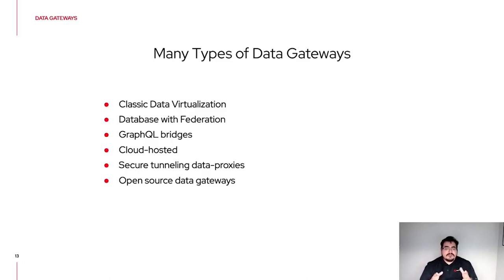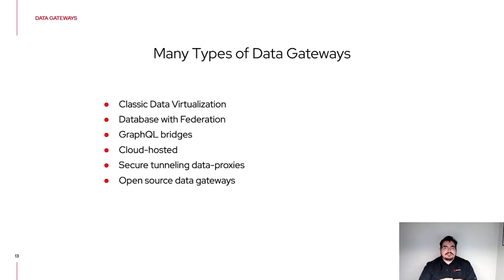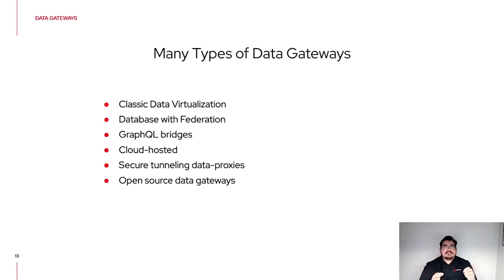GraphQL bridges are commonly found in mobile devices or front-end applications that need to make several changes to a data store simultaneously — using GraphQL allows applying different types of changes in a single call. There are also cloud-hosted data gateways, like AWS Athena and AWS Redshift, which provide single access to a data store backed by S3 buckets or other cloud-provider components, accessible through standards like SQL.